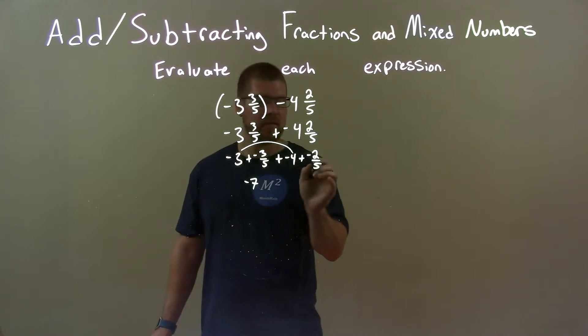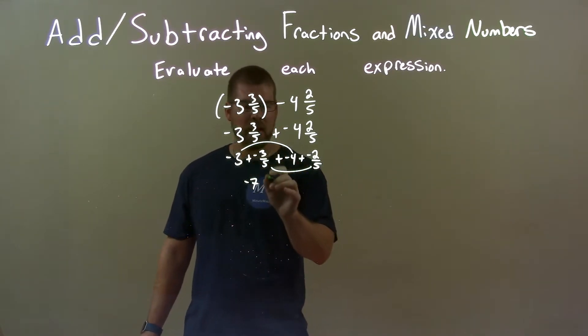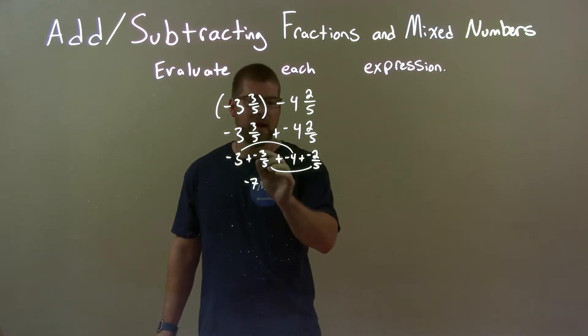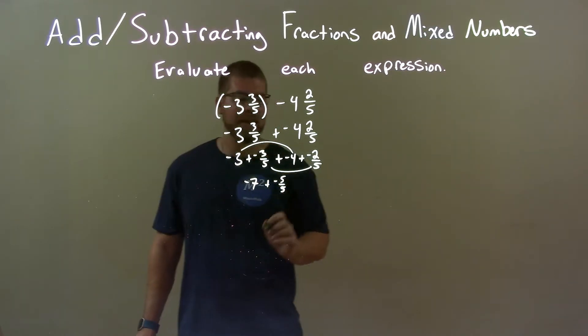And then we can add the negative 3 fifths and negative 2 fifths together and that becomes a negative 1. Same denominator, we add the numerators, negative 5 over 5. So negative 5 over 5, we know is a negative 1.